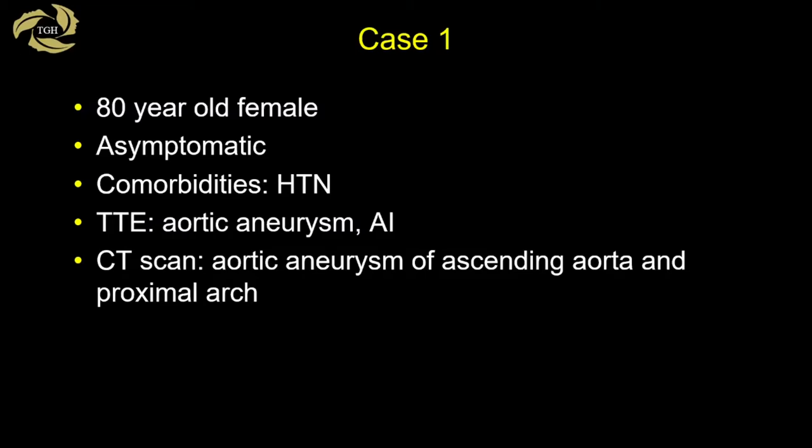The first case is an 80-year-old female. She's asymptomatic with comorbidities of hypertension. On transthoracic echo, she had the incidental finding of an aortic aneurysm and some aortic insufficiency. Her CT scan confirmed an aortic aneurysm of the ascending aorta and proximal arch, and she appears in our operating room.